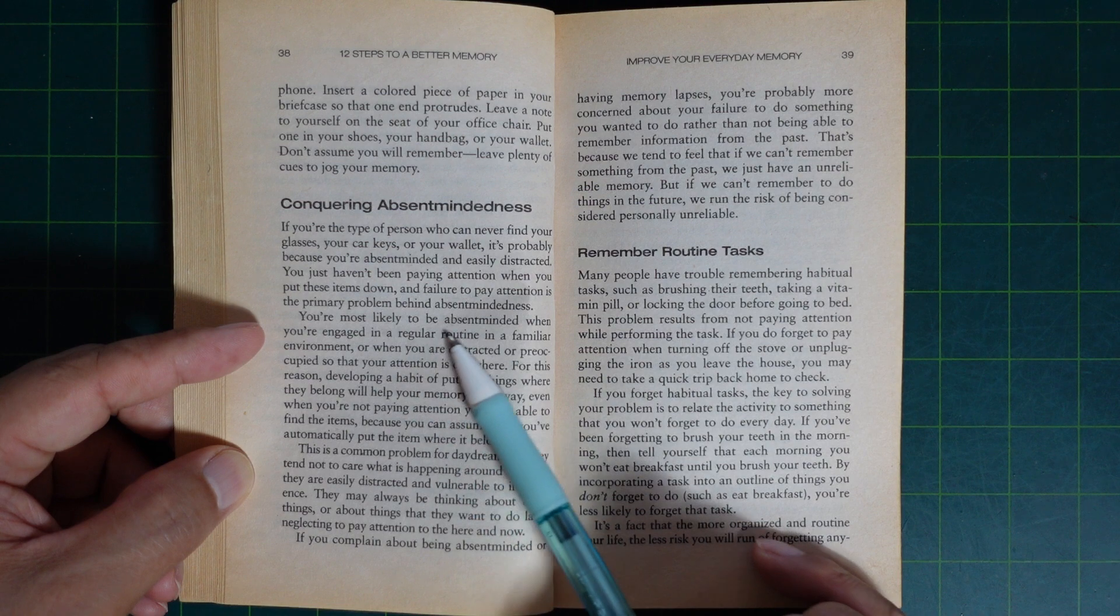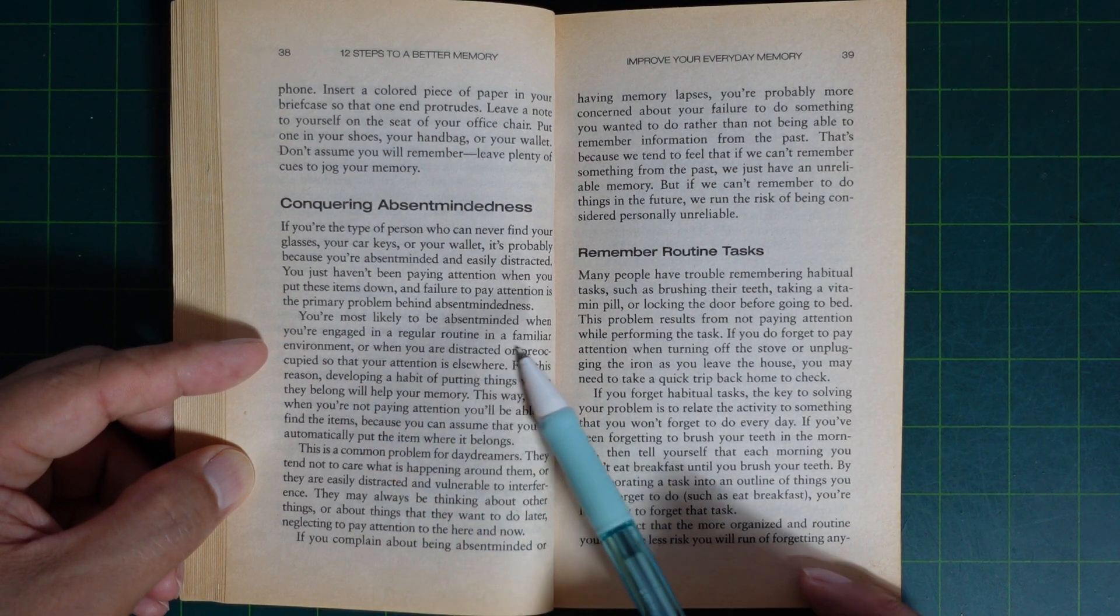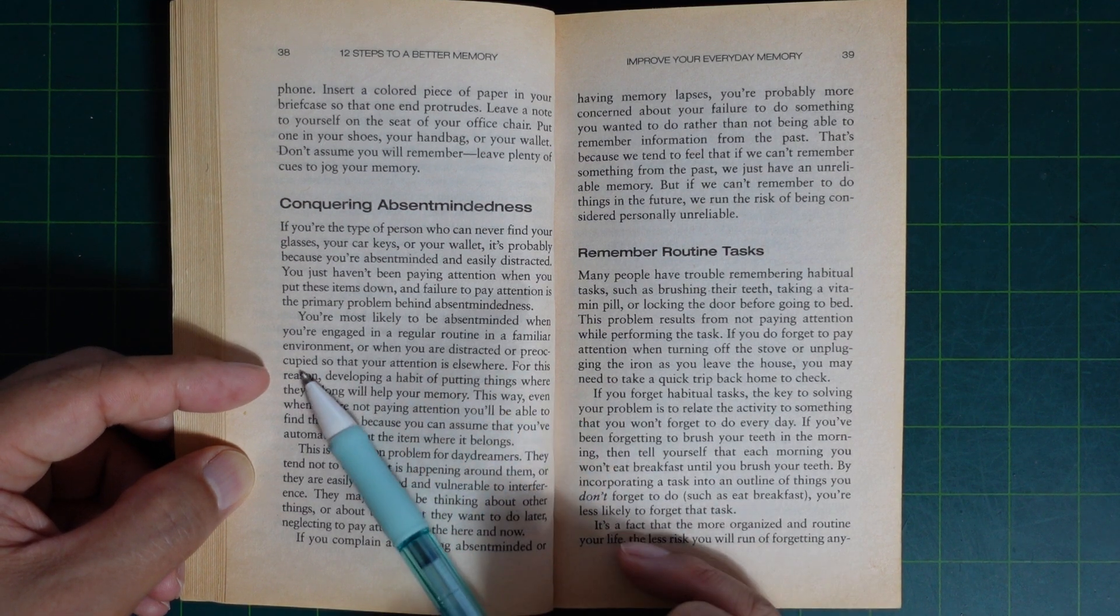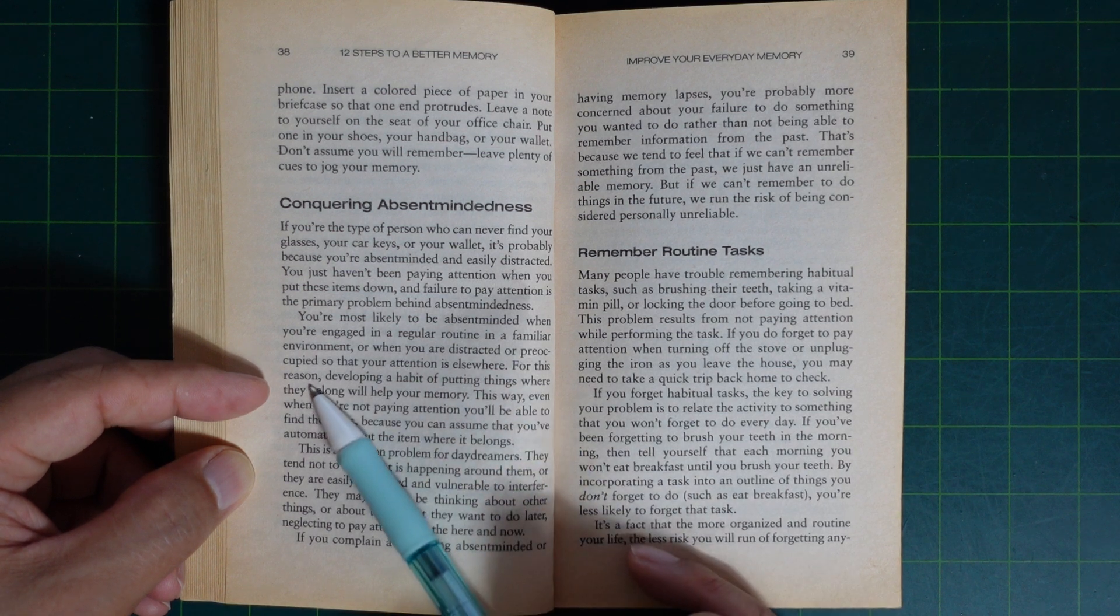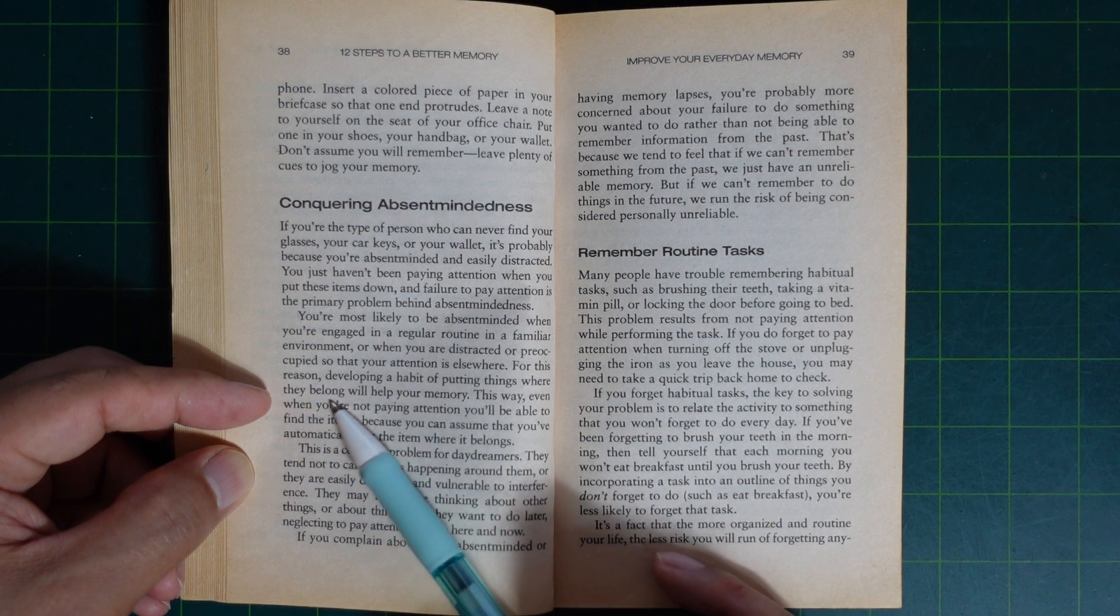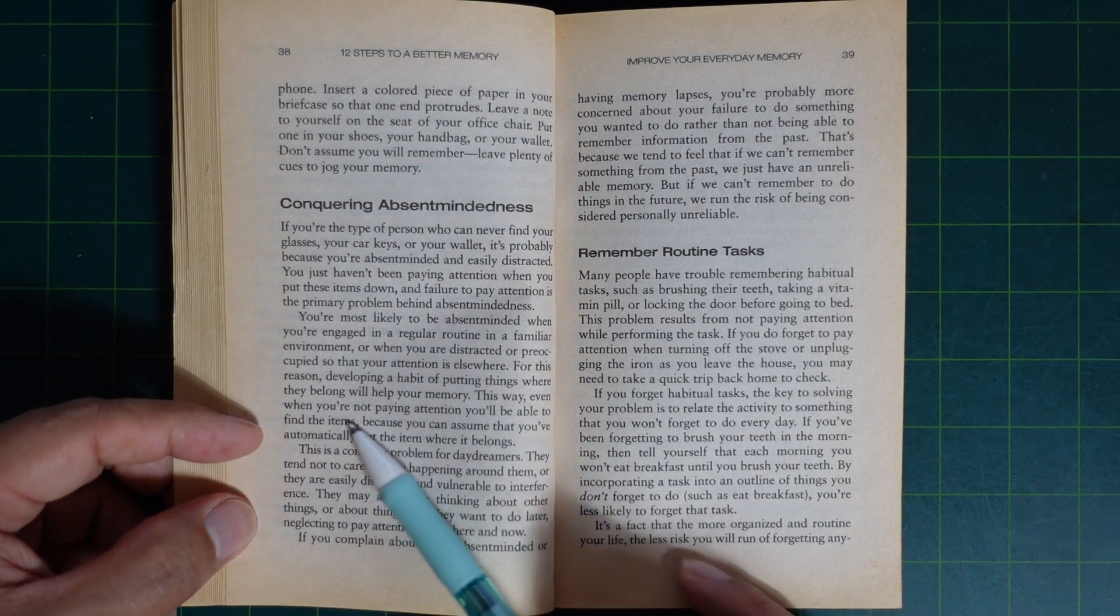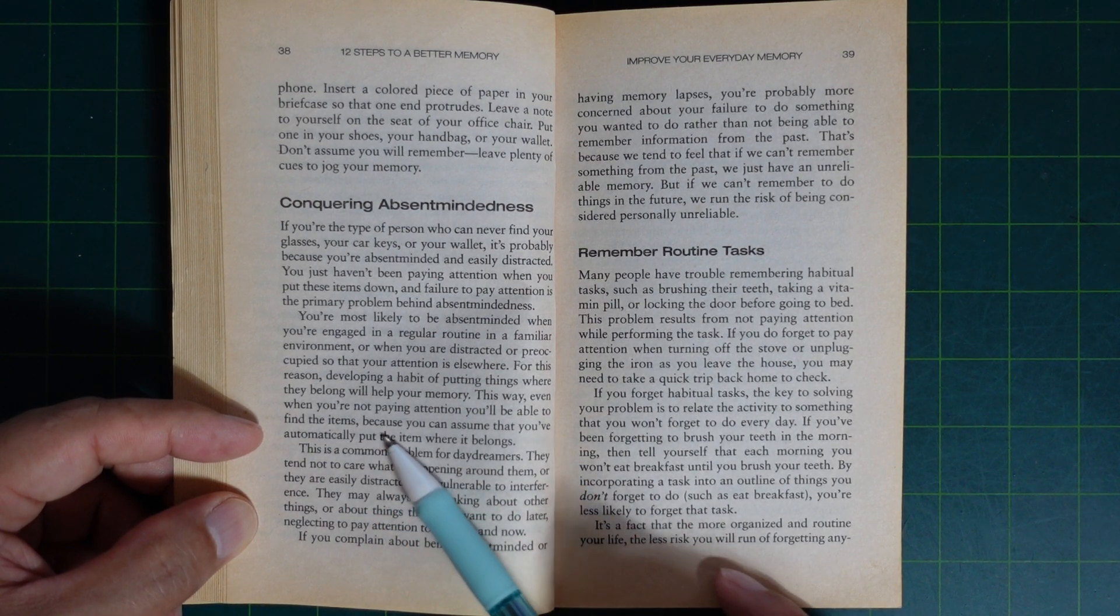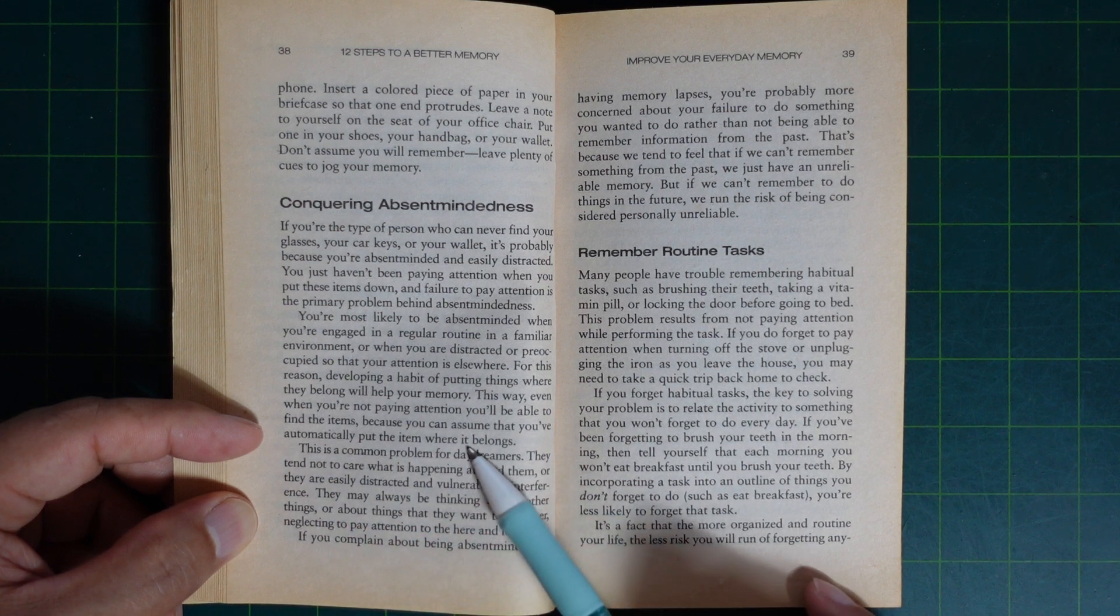You are most likely to be absent-minded when you are engaged in a regular routine in a familiar environment, or when you are distracted or preoccupied, so that your attention is elsewhere. For this reason, developing a habit of putting things where they belong will help your memory. This way, even when you are not paying attention, you will be able to find the items because you can assume that you have automatically put items where they belong.